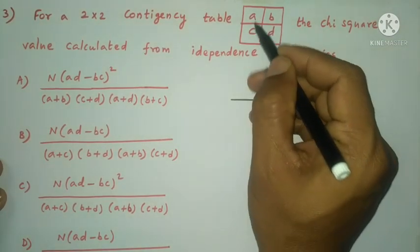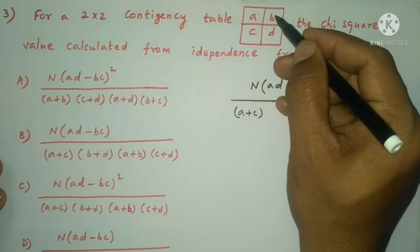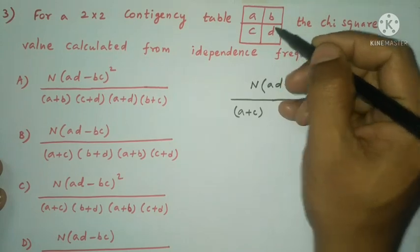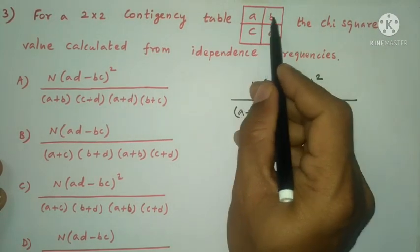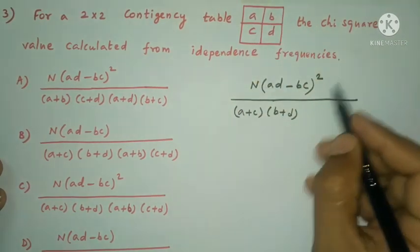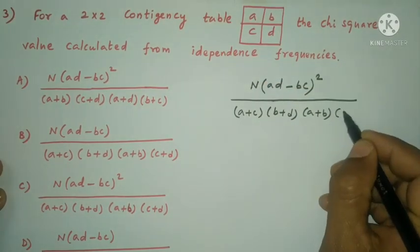first column total, A plus C, second column total, B plus D, first row total, A plus B, second row total, C plus D.